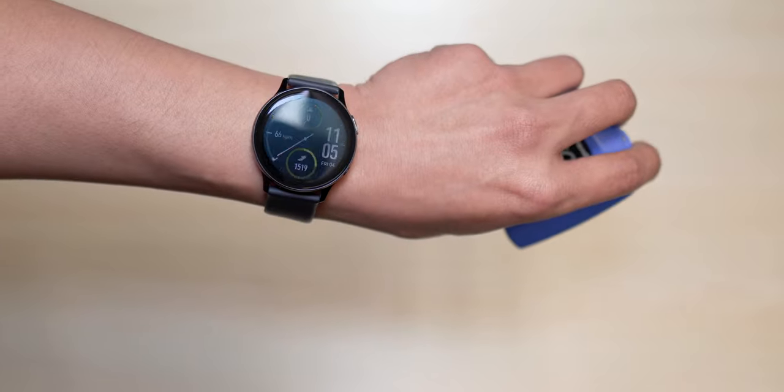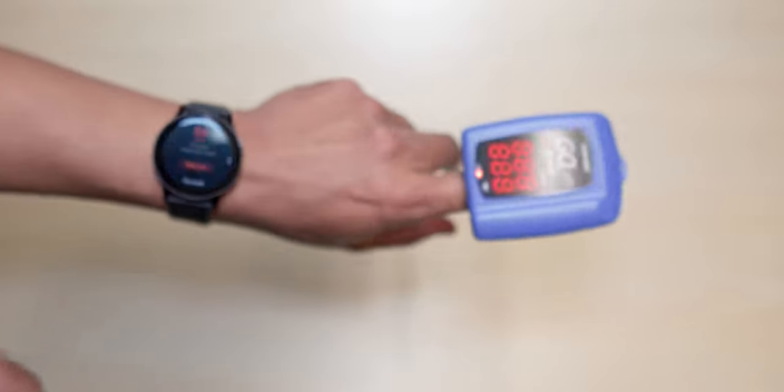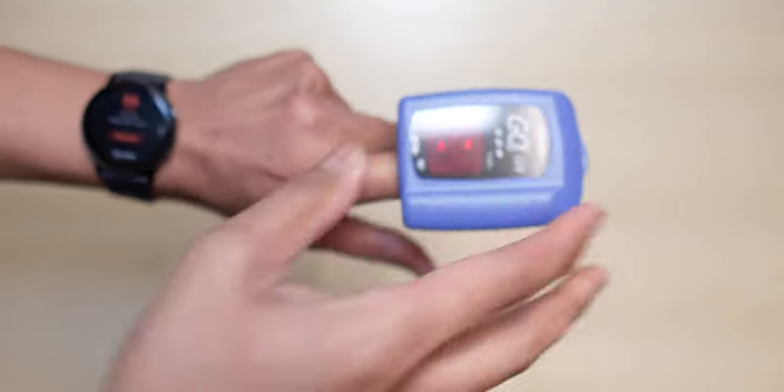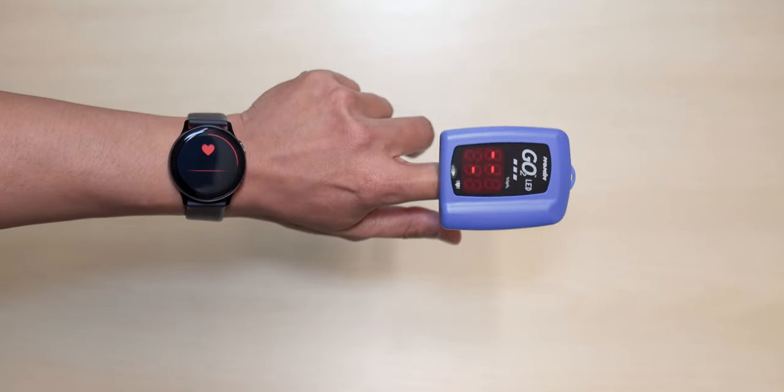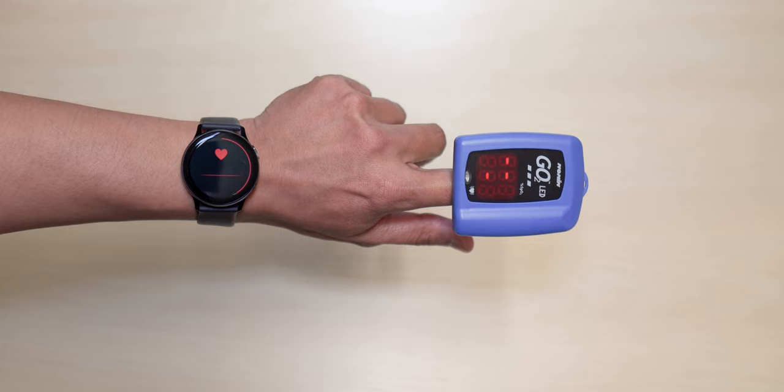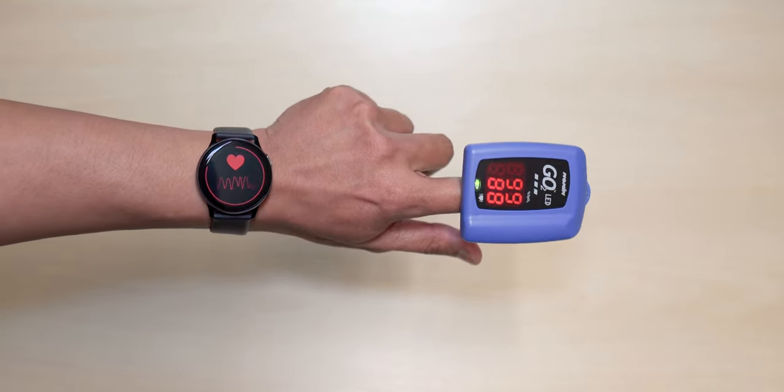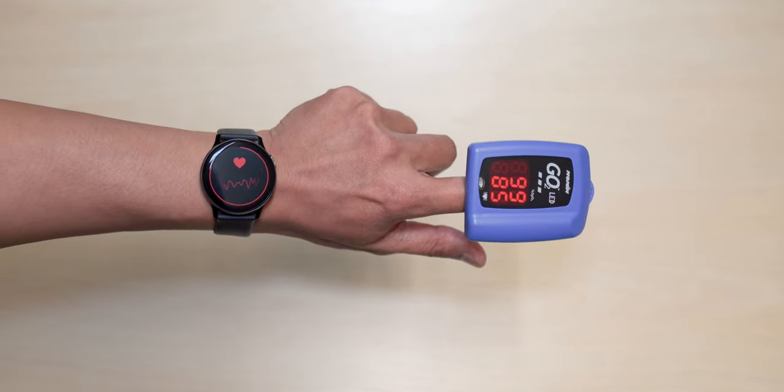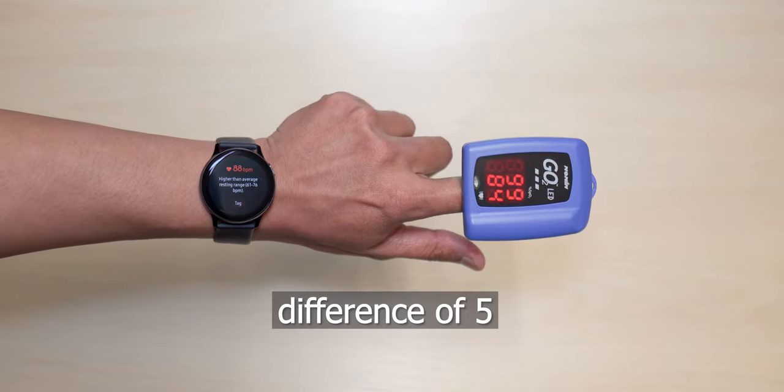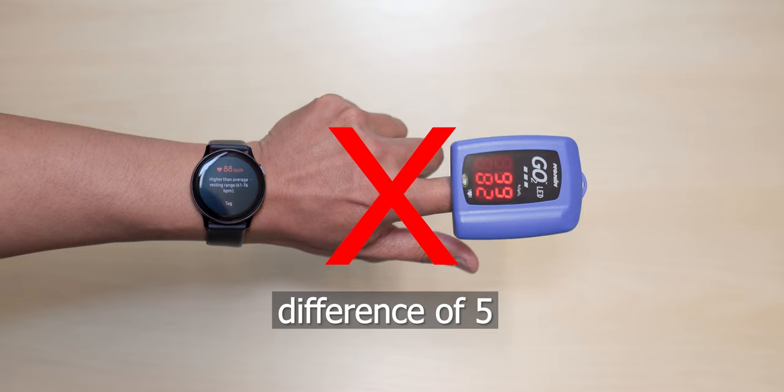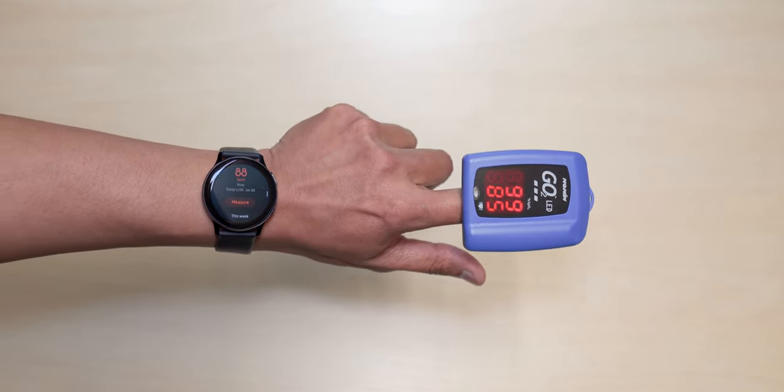Let's activate our heart rate here and at the same time I'm going to put that on. We're going to press measure, so here we go. My heart rate on the oximeter is 88, it's going to fluctuate. 88 and then 83, 82 on the oximeter.